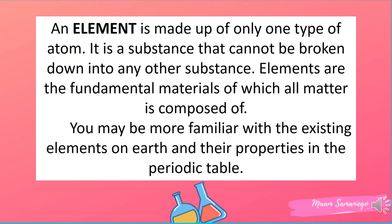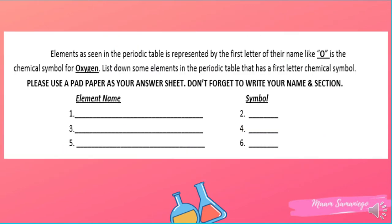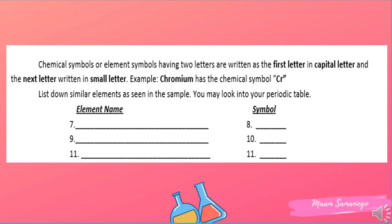Elements as seen in the periodic table are represented by the first letter of their name. Some elements' symbols come from their first letter — tulad na lamang ng oxygen, ang kanyang element symbol is O. Now it's your turn to write three elements and their symbols. Remember, pipiliin mo lang ang mga elements na ang kanilang symbol ay galing sa kanilang first letter. Another example: hydrogen — symbol capital H.